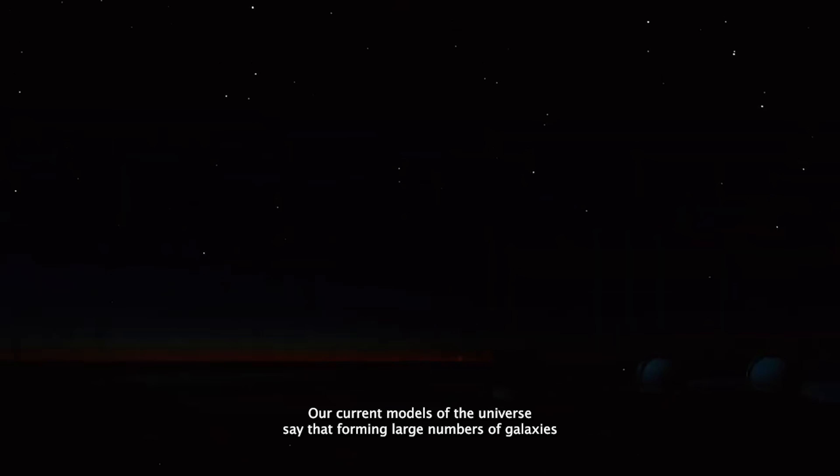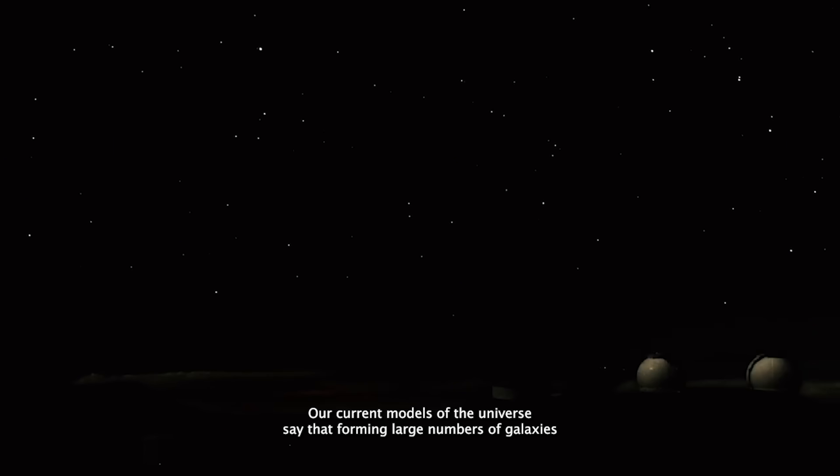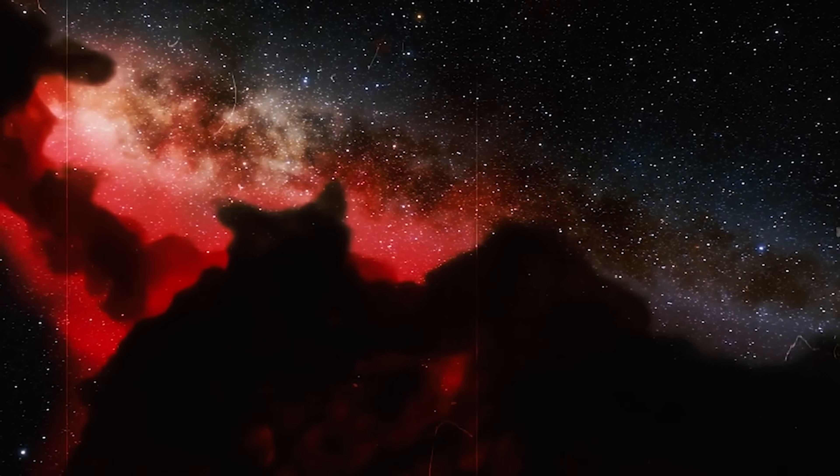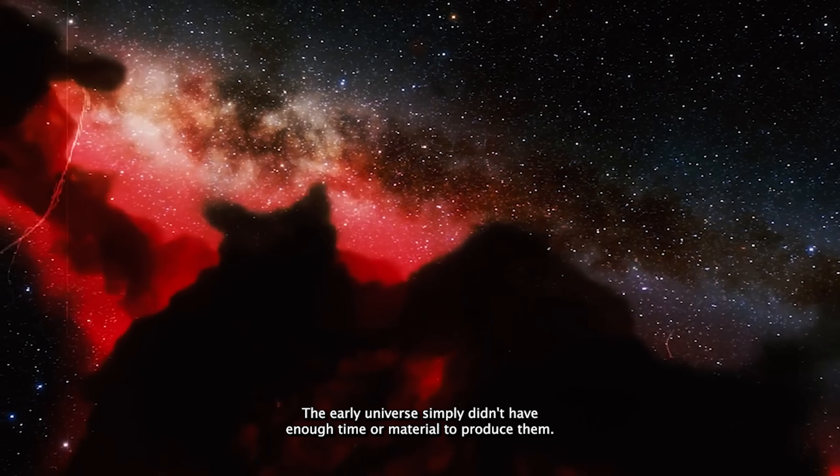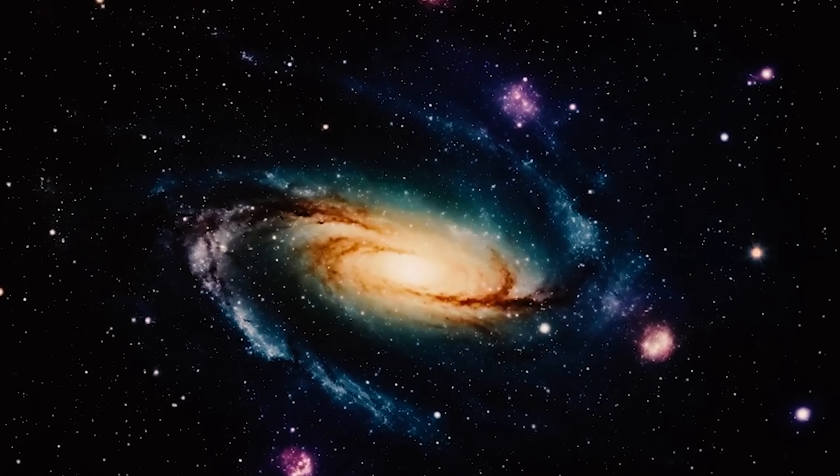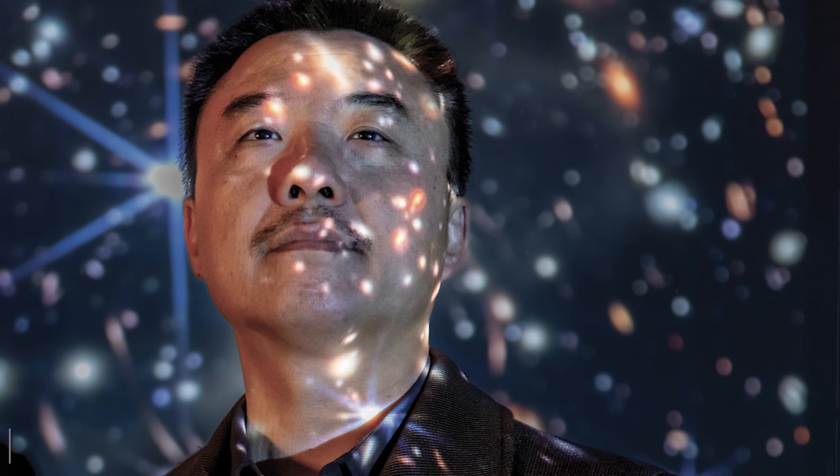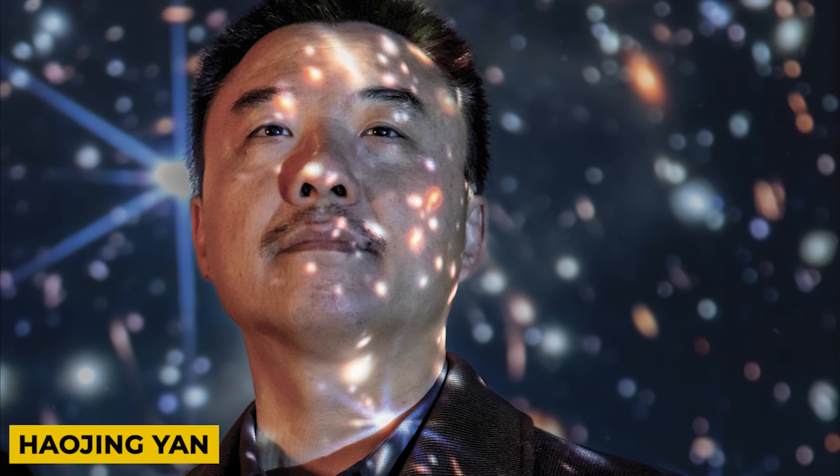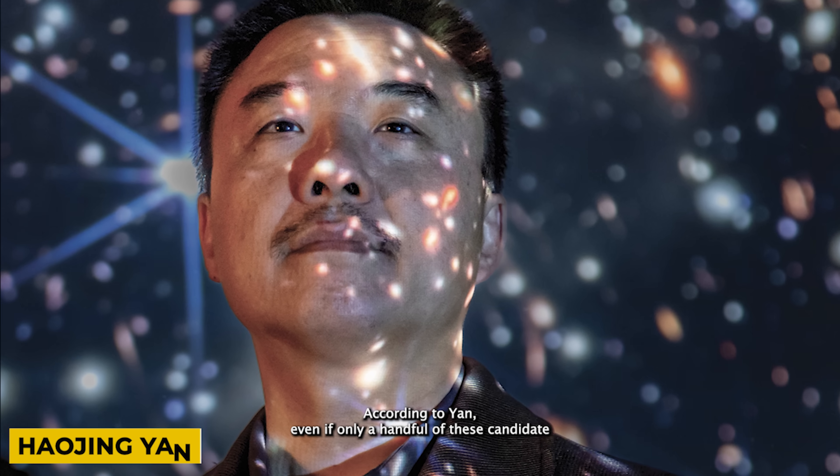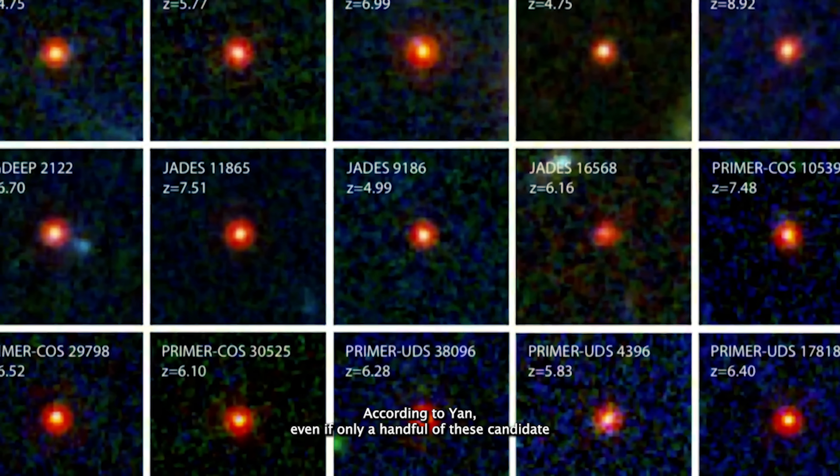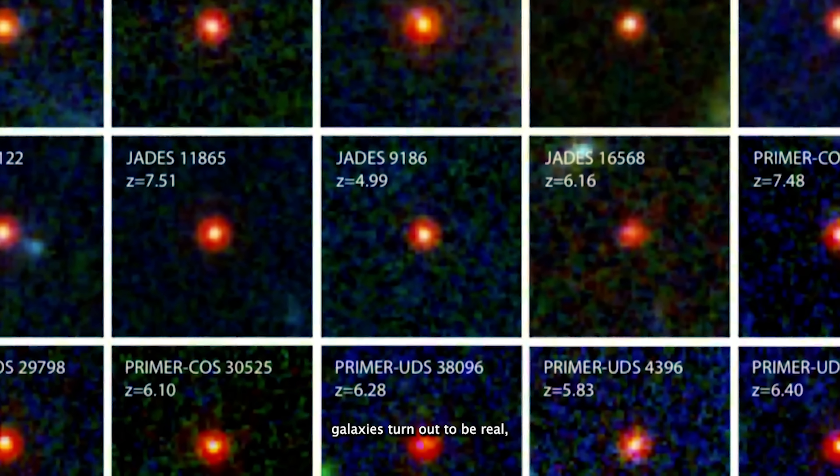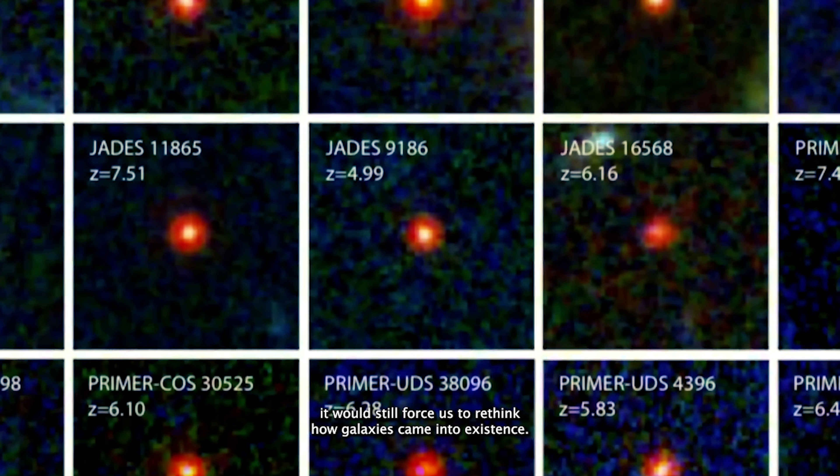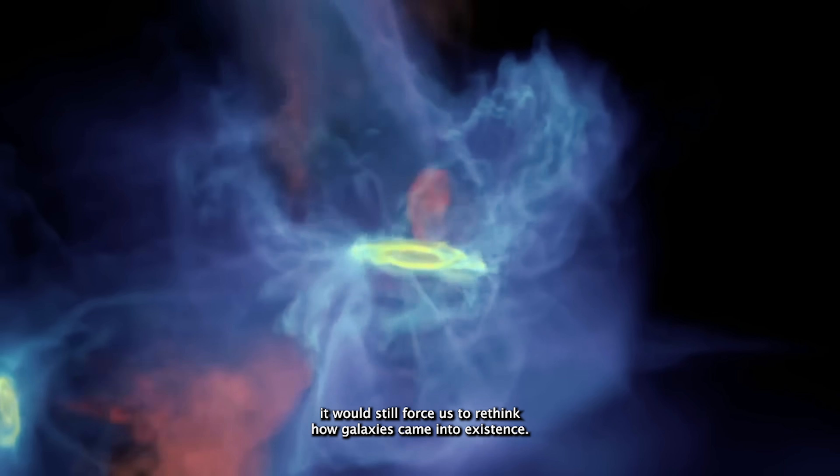Our current models of the universe say that forming large numbers of galaxies right after the Big Bang should have been nearly impossible. The early universe simply didn't have enough time or material to produce them. But a new study, led by astronomer Hao Jing Yun, has flipped that idea on its head. According to Yun, even if only a handful of these candidate galaxies turn out to be real, it would still force us to rethink how galaxies came into existence.